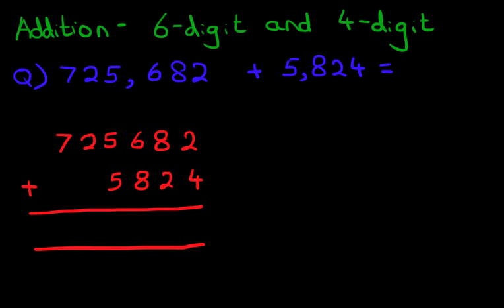Now we can label the columns. Let's do that. We've got the units here, tens, hundreds, thousands, ten thousands, and hundred thousands. So we have done the first stage, which is to rewrite the question from the horizontal format into the vertical format.